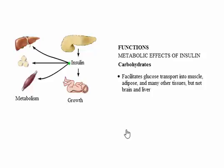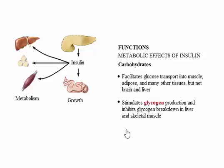Insulin facilitates glucose transport into most cells by stimulating the insertion of insulin-dependent glucose transporters into cell membranes. Brain and liver are freely permeable to glucose at all times through transporters that do not depend on insulin. Insulin stimulates glycogen production and inhibits glycogen breakdown in liver and skeletal muscle, and inhibits synthesis of glucose from amino acids and glycerol in the liver. All of these actions decrease plasma glucose levels.